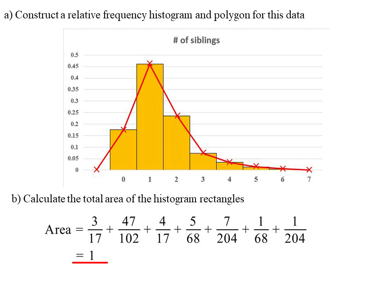Calculate the area of those rectangles. All have a width of 1, so it's the probability of each added together. Of course it equals 1 - the sum of the probabilities.